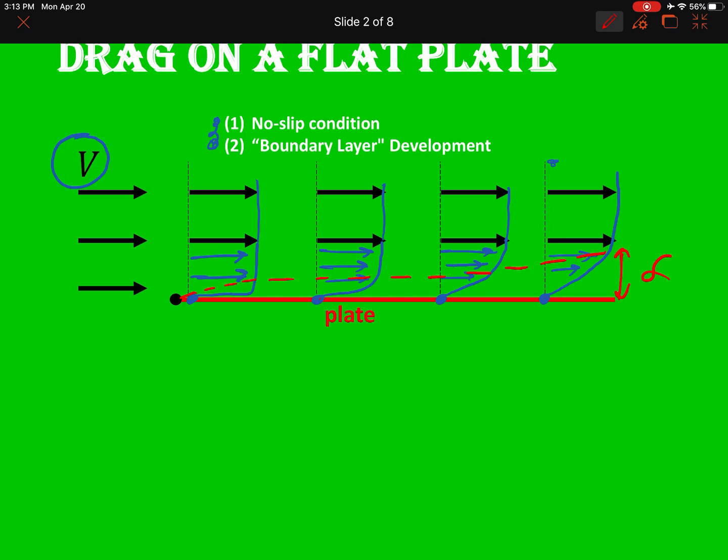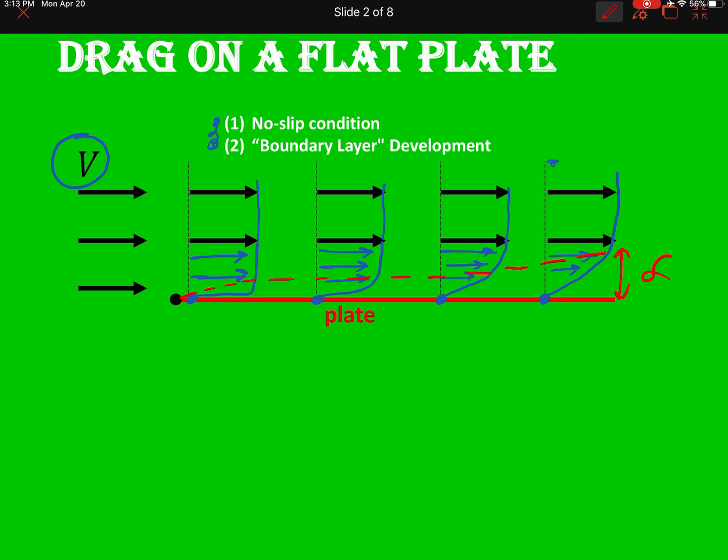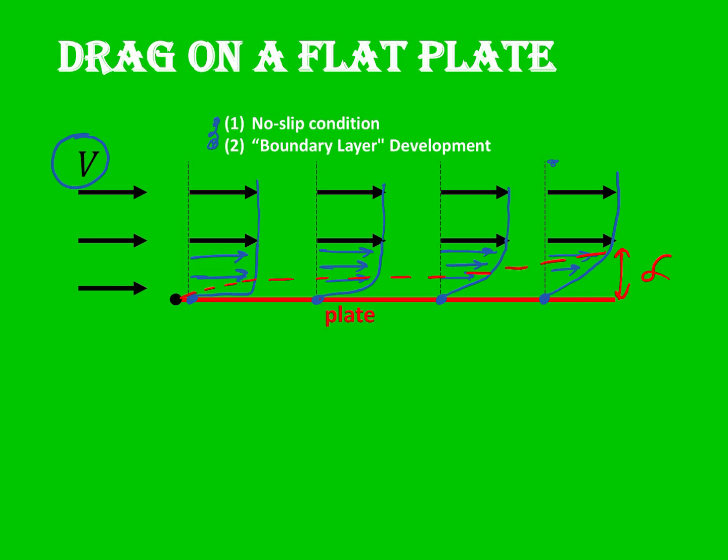Related to the boundary layer is that as you move downstream, the boundary layer may trip from laminar to turbulent. So there's an idea that if the plate is long enough, then you may have laminar boundary layer on this side, and you could have turbulent on the other side. And we'll talk about that in the next slide.